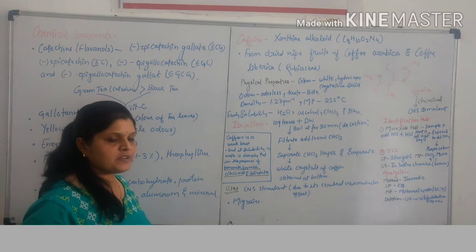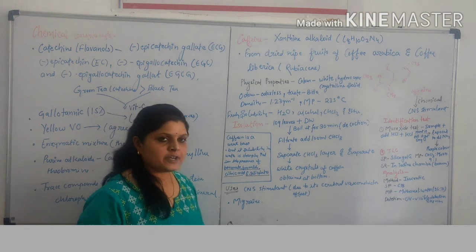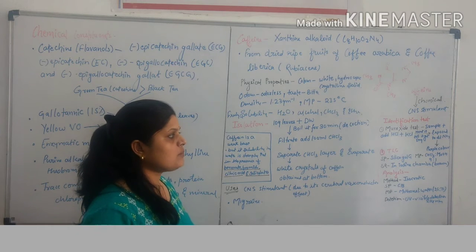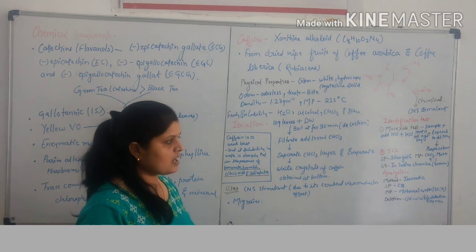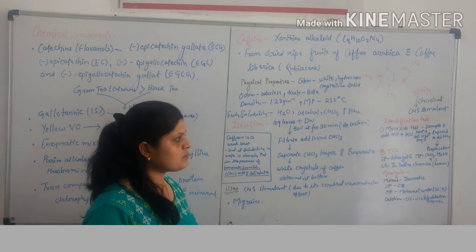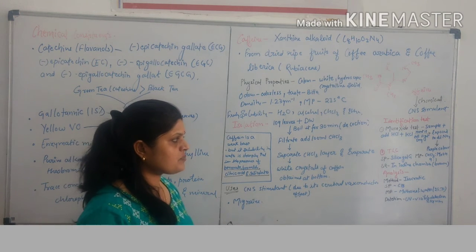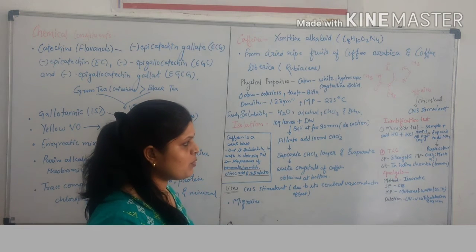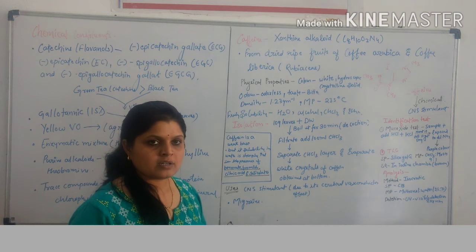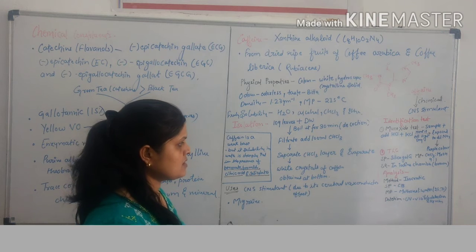Identification test of caffeine: Caffeine is identified by murexide test or thin layer chromatography. In murexide test, take sample and add hydrochloric acid and potassium chlorate. Heat it until it gets dry. This dry powder is exposed to dilute ammonia. Purple color indicates the presence of caffeine.